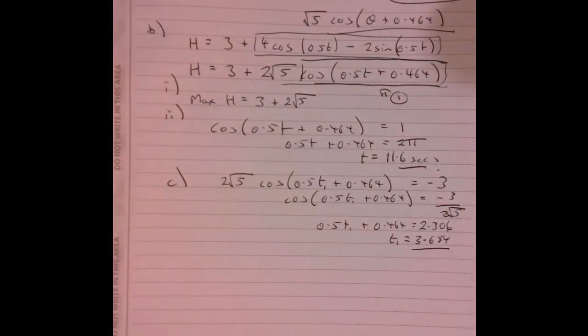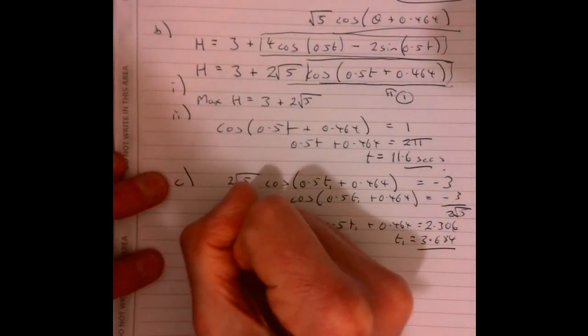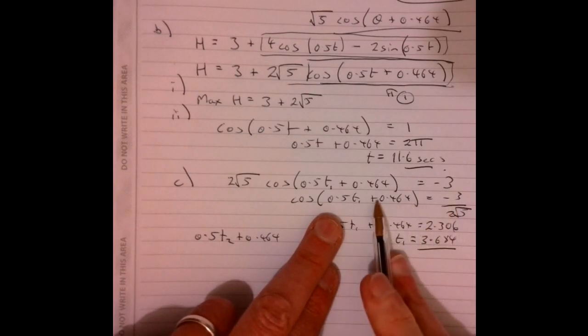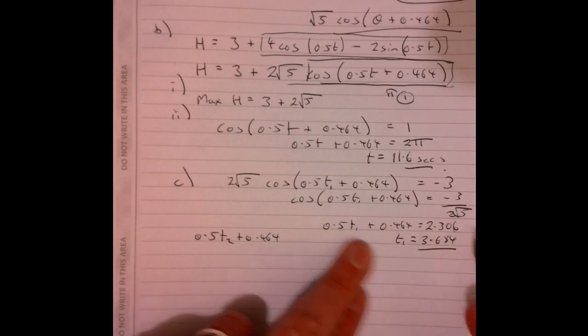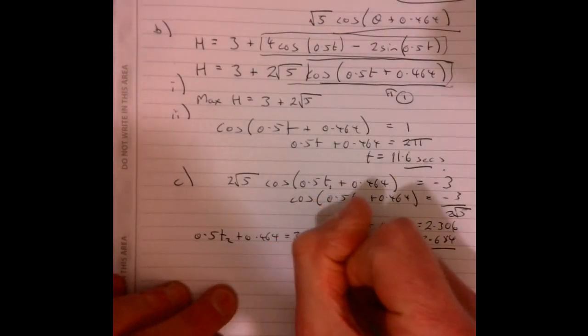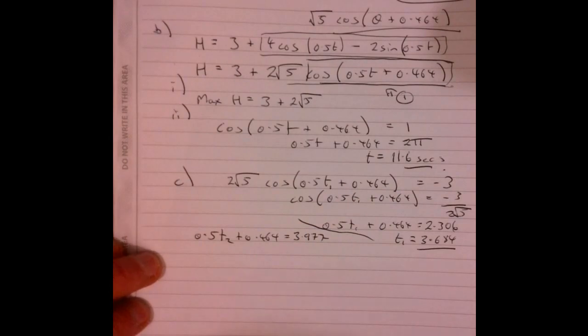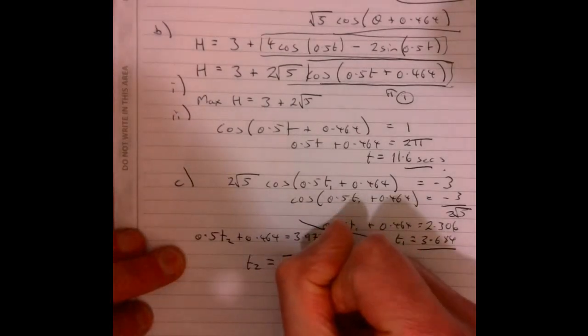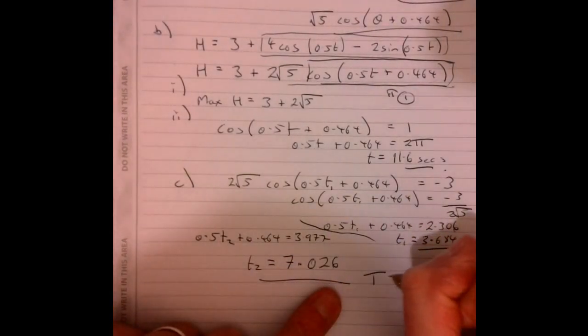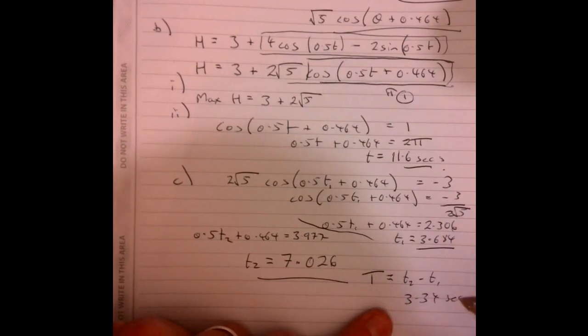Now I need to work out the second solution, when it comes back up above the water. So I'm going to think about when that happens. 0.5T2 plus 0.464. So when I do my inverse cos, if you think about how cos works, it's come down before pi and then it's going to go above pi, isn't it? So that's going to equal 3.977. So just think about cos and about how that appears. So now we're going to work out what T2 equals. So 7.026. And then our total time where it's below is going to be T2 take away T1. And that's 3.34 seconds.